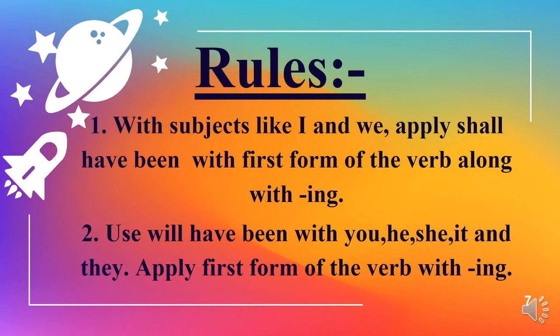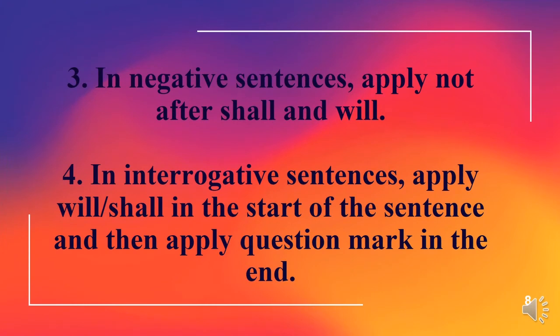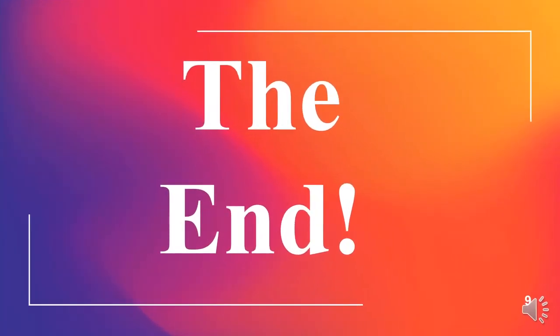Yani you, he, she, it, they ke saath 'will have been' lagayin aur verb ki pehli form aur -ing lagayin. Third rule is regarding negative construction: apply 'not' after shall and will. Yani manfi jumlon mein shall ya will ke baad 'not' lagate hain. Fourth rule is regarding interrogative sentences: apply will and shall at the start of the sentence and then apply question mark at the end. Yani suvalia jumlon mein will ya shall subject se pehle lagate hain aur aakhir mein suvalia nishan lagate hain.